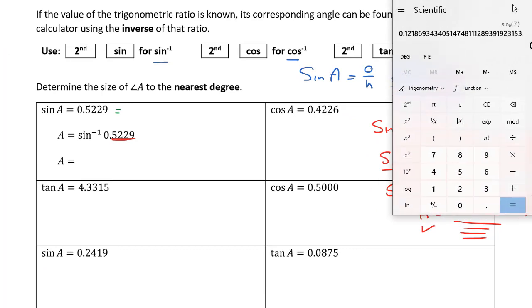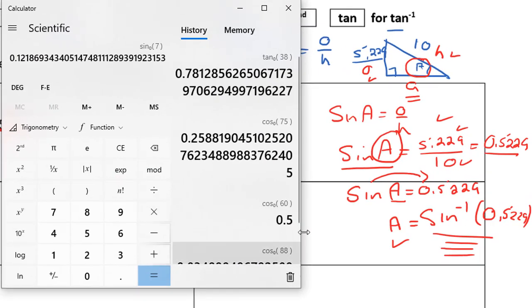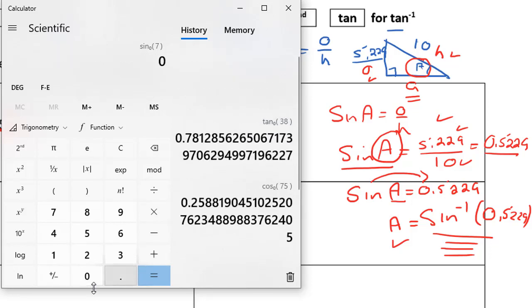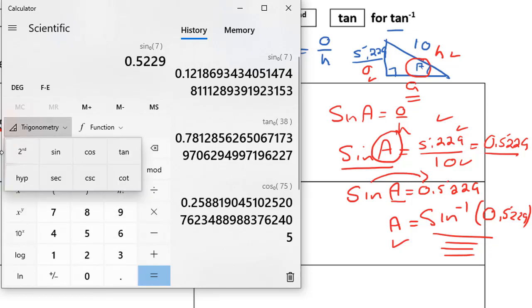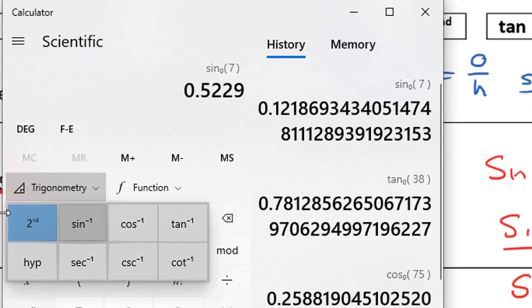Let's pull our calculator up. The Windows calculator is a backwards calculator, so I have to start by typing in the ratio, 0.5229. Now I go into my trigonometry drop-down. I don't have sine inverse here—I have sine, cosine, and tangent. But if I want to get to the inverse functions, I have to click on the second button. When I do that, I see sine inverse, cosine inverse, and tangent inverse. I just press the sine inverse button.